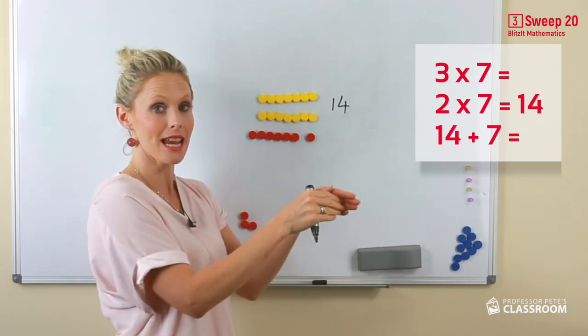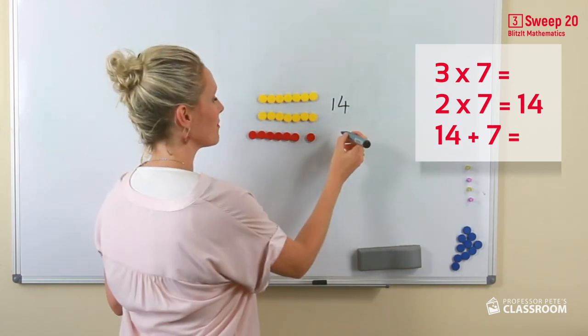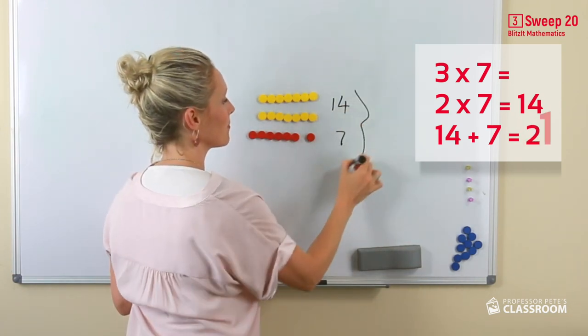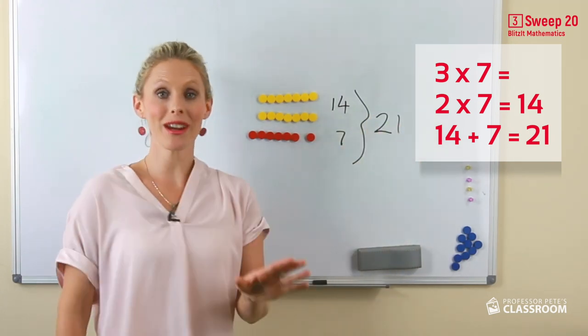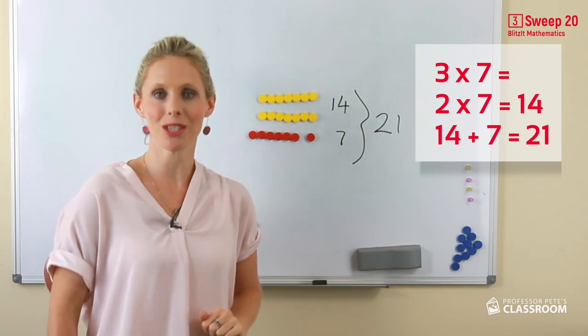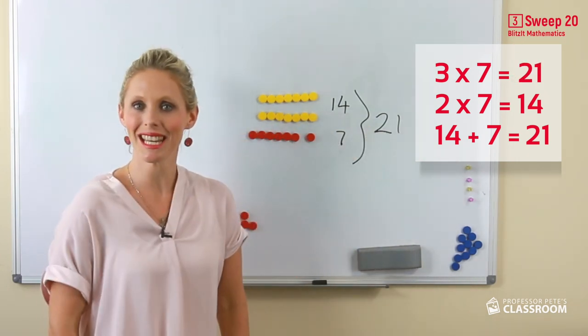So taking to the next ten would be twenty, and one equals twenty-one. So three times seven or seven times three equals twenty-one.